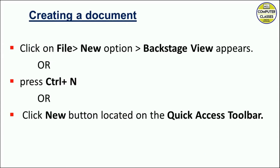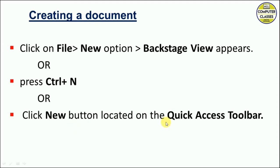Let's start with creating a document. We have three ways to create a document. The first one: after opening the application software, click on File, go to the New option — the Backstage view will appear — and then choose the Blank Document. The second option is to press Ctrl+N. The third option is to click the New button located in the Quick Access Toolbar.